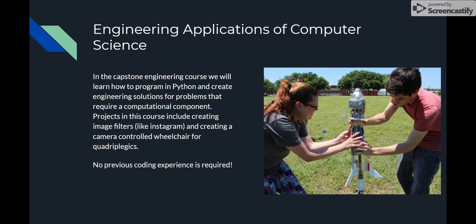The final course is Engineering Applications of Computer Science. It is the second year of Engineer Your World, also designed by the University of Texas. This course is similar to the previous except that all of the projects should include some sort of programming. Students will learn how to code in Python and will use computational principles to solve problems and design things for customers, using programs they create. Some of the projects include creating image filters like those used on Instagram and also a wheelchair controlled by a camera.